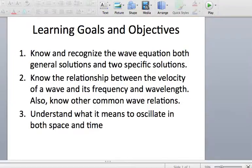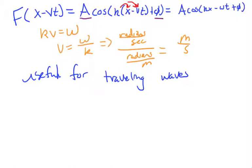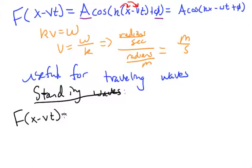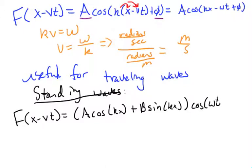Now for standing waves, I recommend this solution, which is f of x minus vt being equal to A cosine kx plus B sine kx, all of that times a cosine of omega t. And in a future video, you'll see why this is nice, but for standing waves, what we can do is say that, since what really defines a standing wave is the boundary conditions, and the boundary conditions happen in position.